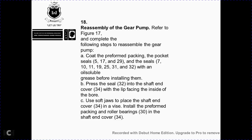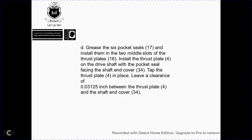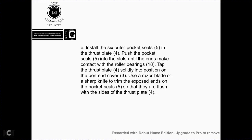Reassemble the gear pump. Refer to figure 1-7. Coat the preformed packing in the pocket seals 5, 17, and 29, and seals 7, 10, 11, 19, 25, 31, and 32 with oil-soluble grease. Install the preseal 32 on the shaft and into cover 34 with the lip face toward the inside of the bore. Use soft jaws in the vise with cover 34. Grease the six pocket seals 17 and seal in the middle. Install thrust plate 16, then thrust plate 4 with the drive shaft pocket, seal facing toward shaft and cover 34. Tap thrust plate 4 into place, leaving a clearance of 0.03125 inch between thrust plate 4 and cover 34.